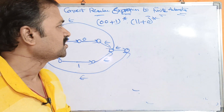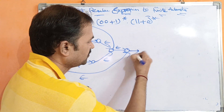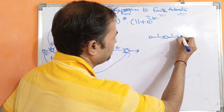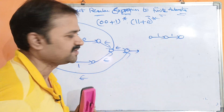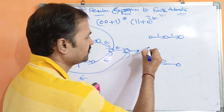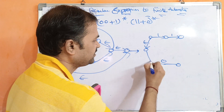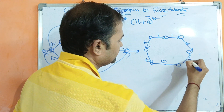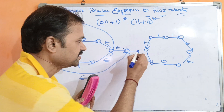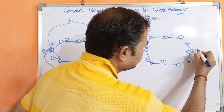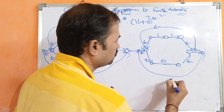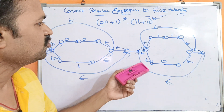This is the concatenation (dot) operation. Next we represent (11 plus 0) whole star. For 11 we require two states, combining into a single state. For 11 plus 0, we add a state for 0, then add two more states with epsilon transitions to form the union. For (11 plus 0) whole star, we add two more states with epsilon transitions for the star operation.